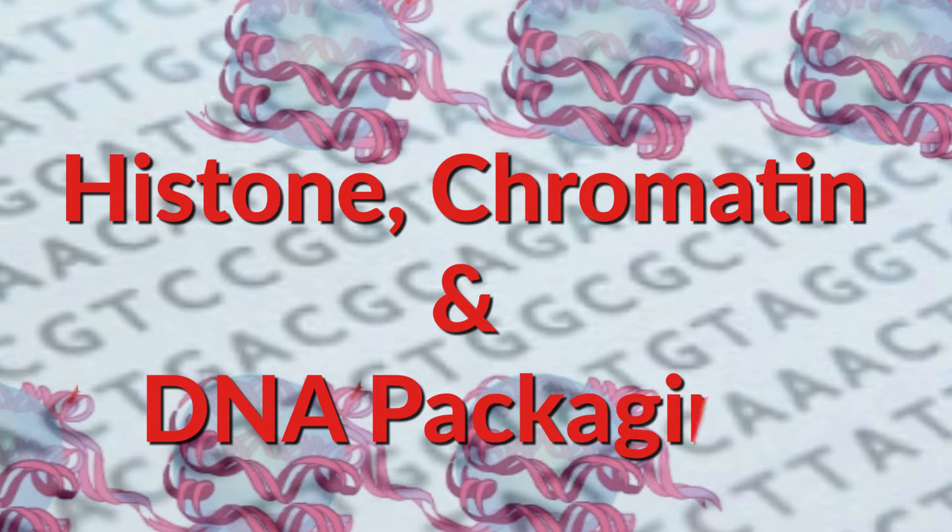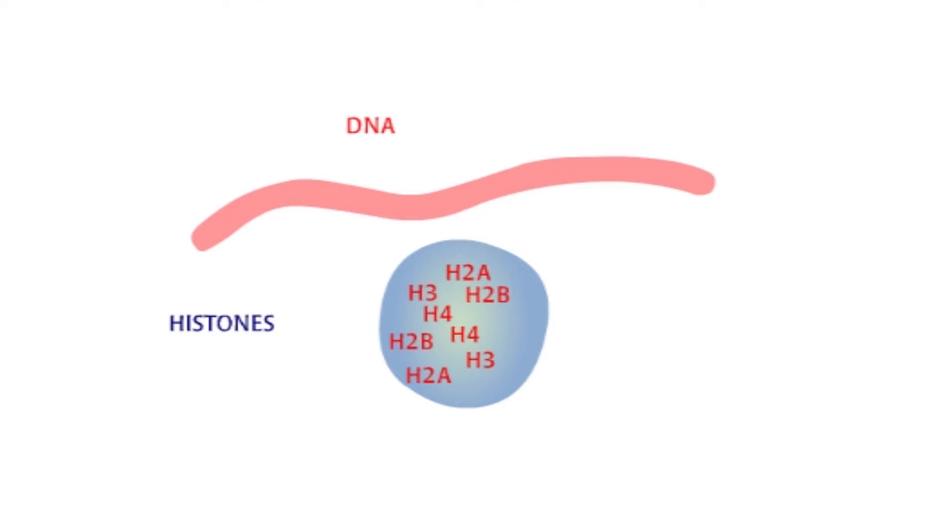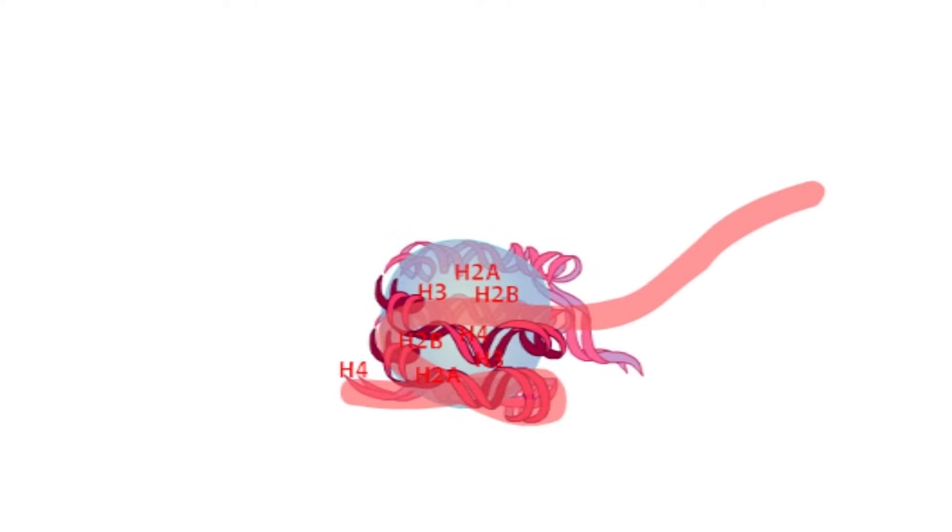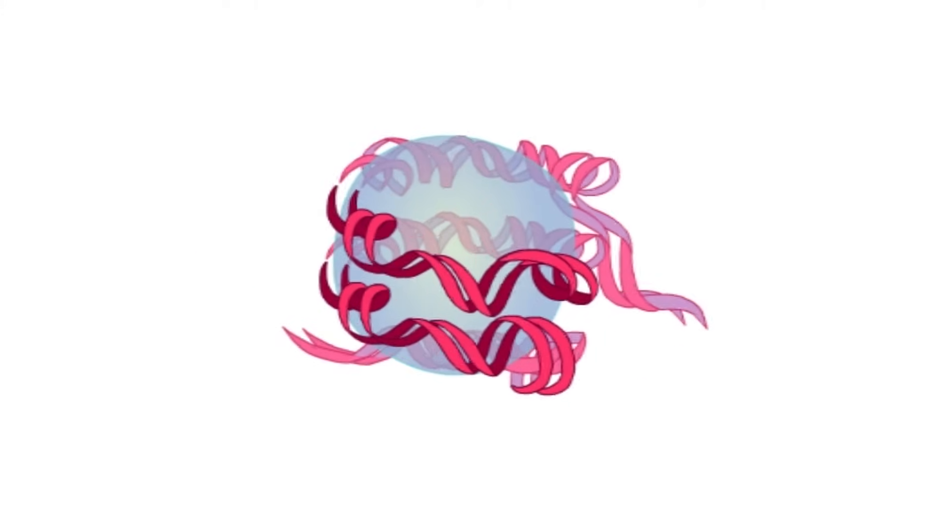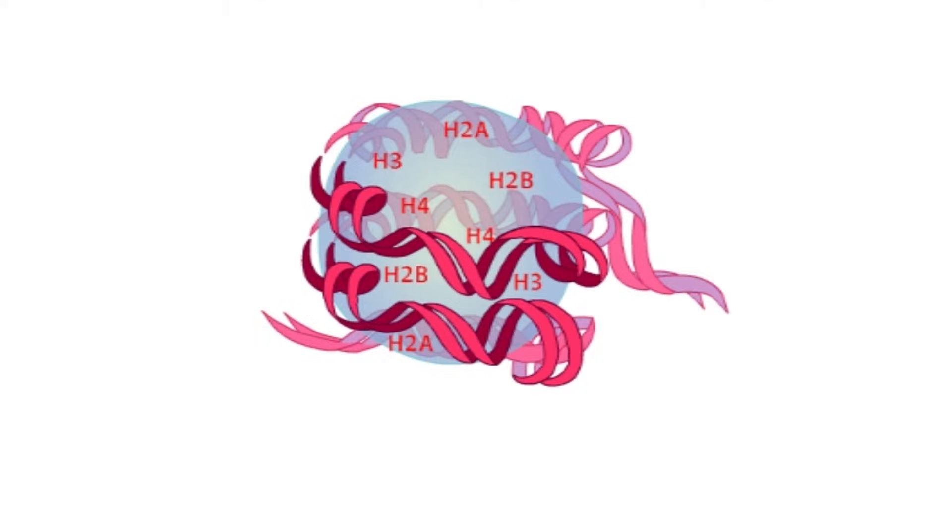In order to fit within a cell, DNA is packaged. DNA strands are wrapped around proteins and ultimately coiled over 1,000 times. This structure is called chromatin and the proteins are called histones. There are five different kinds of histones: H1, H2A, H2B, H3, and H4.